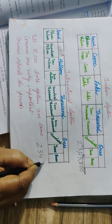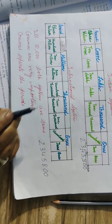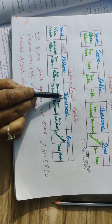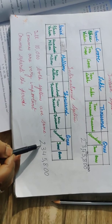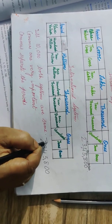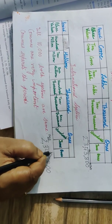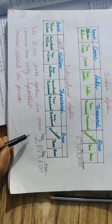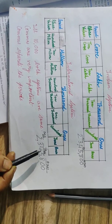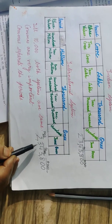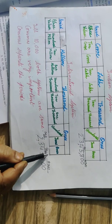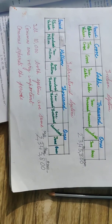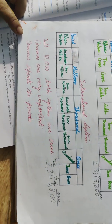Now take the same number 2,345,800 in the International system. The ones period has three places, so we place a comma after the first three digits: 800. The thousands period also has three places, so we place a comma: 345. The remaining digits form the millions period. We read: number then period — two million, three hundred forty-five thousand, eight hundred. We never mention 'ones' at the end. Up to ten thousand, both systems are the same. Commas are very important to differentiate and separate the periods.